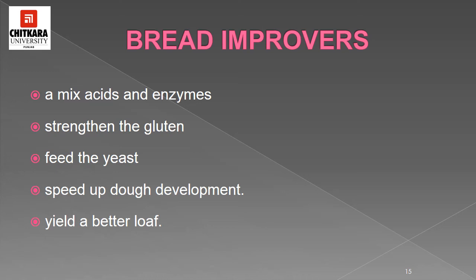Malt is of two types: diastatic and non-diastatic. Enriching agents are a way of increasing the nutritional value of bread along with improvements in volume, texture, and keeping quality. This enrichment is done using fats, milk products, and eggs.